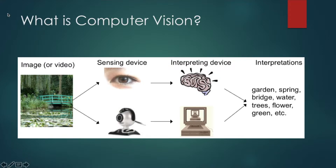For that we need high-computing devices. If the image contains many features, we need high-computing devices because of the computations required. This is how we can differentiate between a human's sensory perception and a computer's sensory perception. The vision or perception seen by a computer is what is known as computer vision.